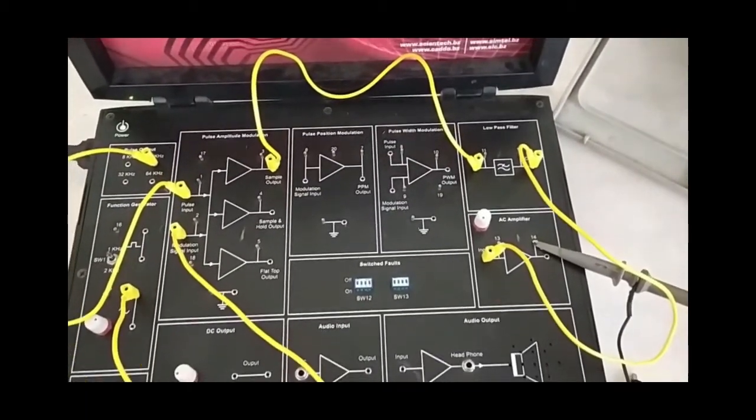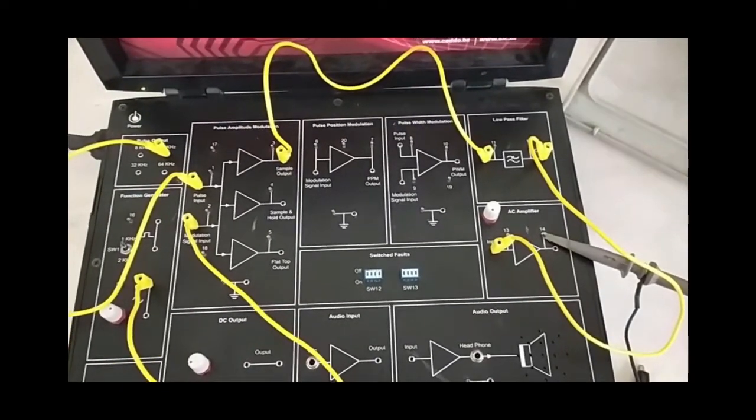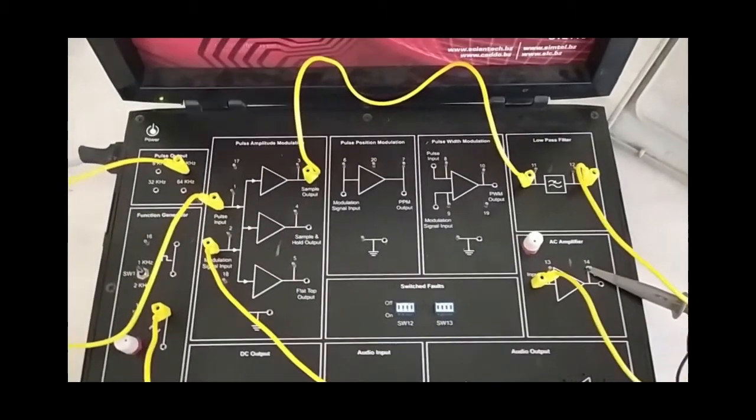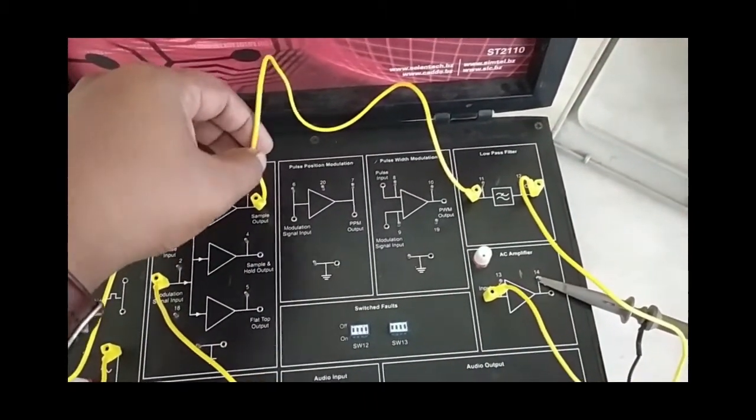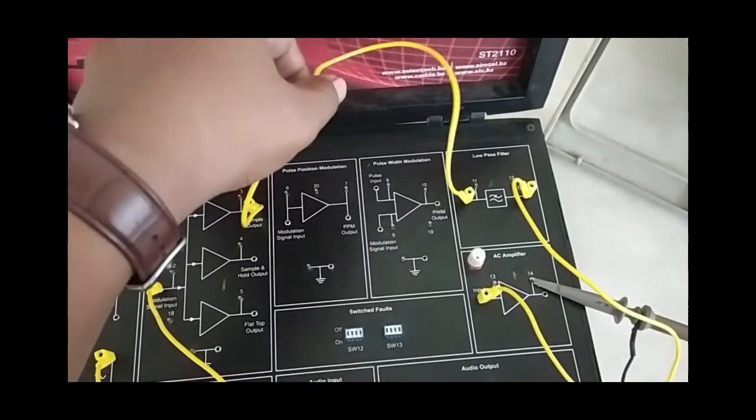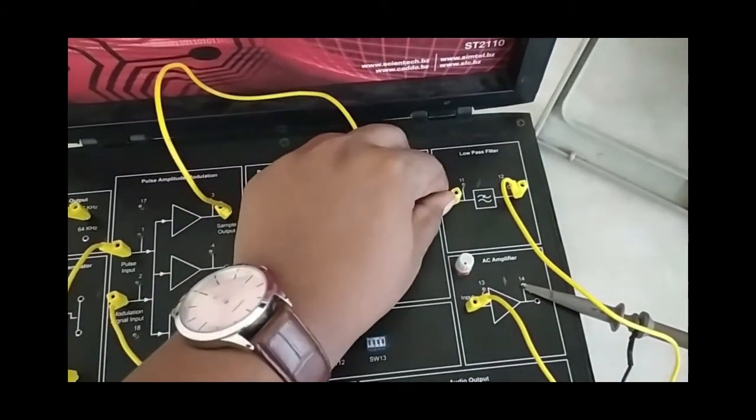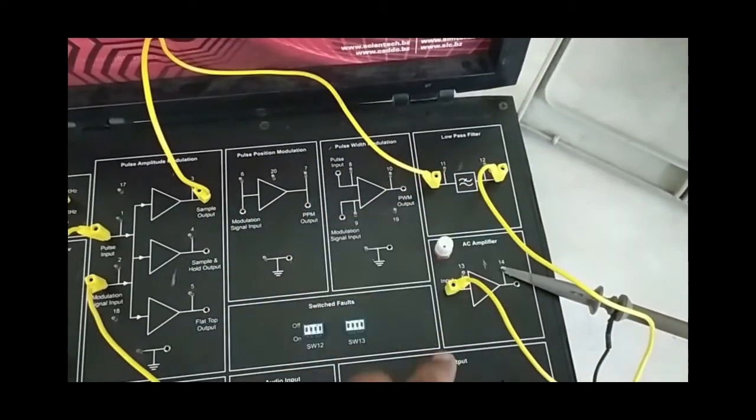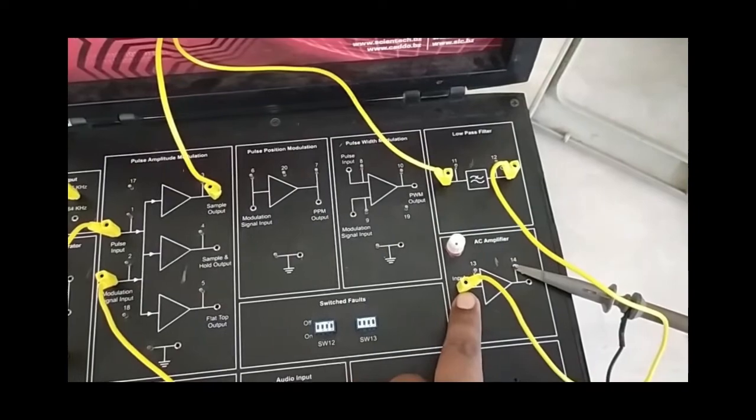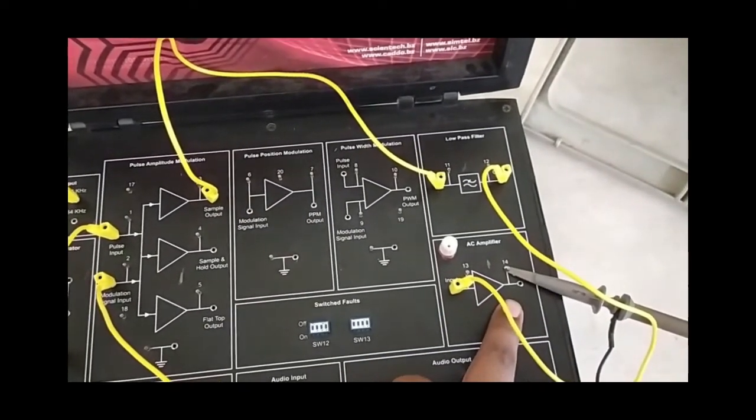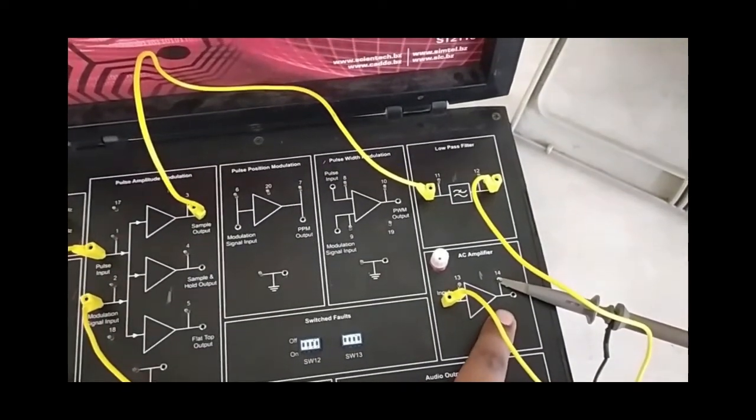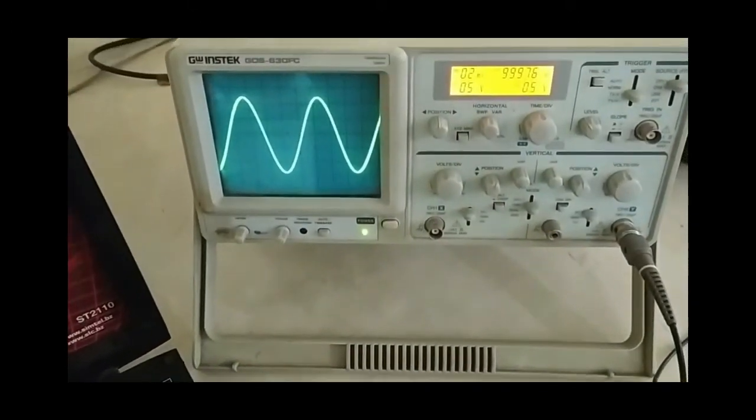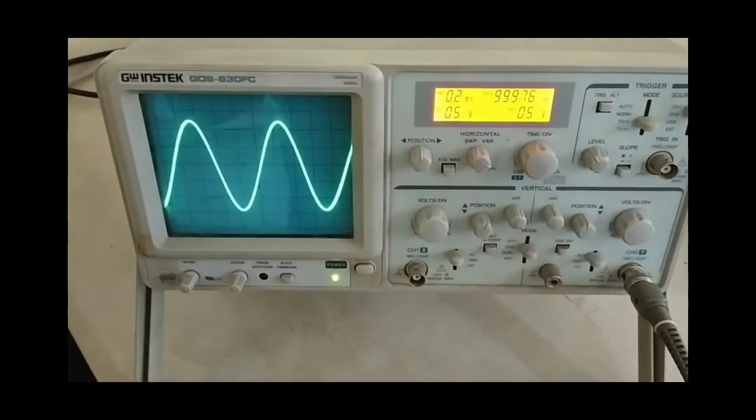Now for the demodulation of PAM, the connection is shown here. From the sample output portion, the wire is connected to the low pass filter input, and from the output of the low pass filter, the wire is connected to the AC amplifier input. From the output of the AC amplifier, it is straight to the CRO, and the output of the original message signal is shown here.